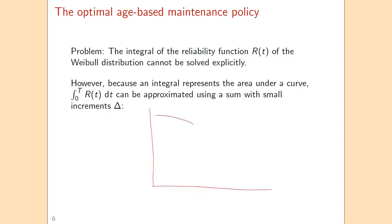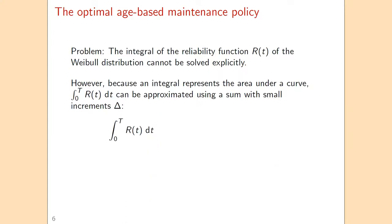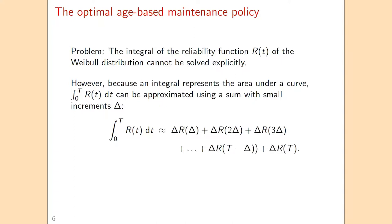The reliability function looks like a curve, and we want the area under this graph from zero to the maintenance age capital T. We split the x-axis into very small segments of size delta, and approximate the area under the graph using rectangles. All rectangles have width delta, and the height of each rectangle is given by the outcome of the reliability function. This gives a very good approximation of the area as long as delta is chosen sufficiently small. Mathematically, the integral from zero to capital T is given by a summation up to the maintenance age, and this is how we will implement it in Excel.